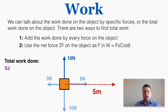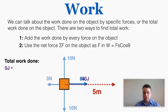The work done by the 8 Newton force is the force times the displacement times cosine of the angle. Here the angle is 0, so cosine is 1. So 8 times 5 equals 40 joules. The downward force of 10 Newtons is also perpendicular to the displacement, so it also has a total work of 0.